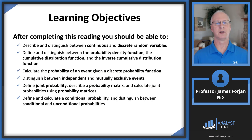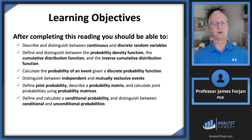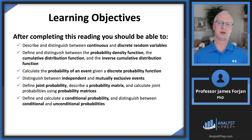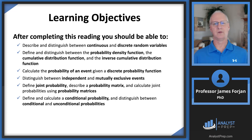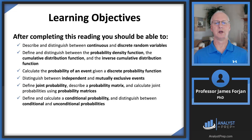Let's look at the learning objectives of this chapter. Notice there are lots of action words: describe, distinguish, and define, with one or two calculate. We're going to look at continuous and discrete random variables, the PDF, the CDF, and the IDF. We'll calculate the probability of an event given a discrete probability function, and look at independent events, mutually exclusive events, joint probabilities, and conditional probabilities.